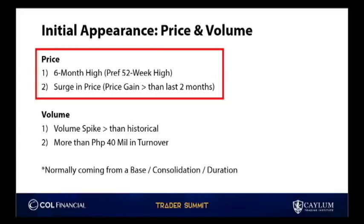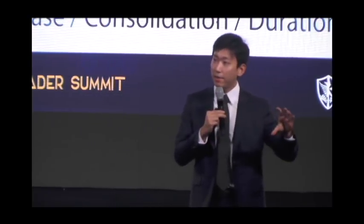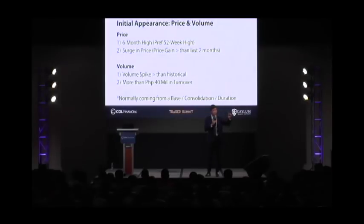Second, after we see a six-month high, we want to see the surge in price. What do we mean by surge in price? Normally it's greater than 5% to 10%. But normally the range of the price gain has to be greater than the prior two months before that. So when you see a chart that breaks out, that's really what we're looking for. Initial screening is not that difficult — you're looking for a six-month high, a stock that is breaking out with volume, and a strong candlestick.